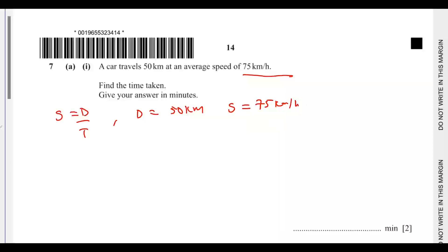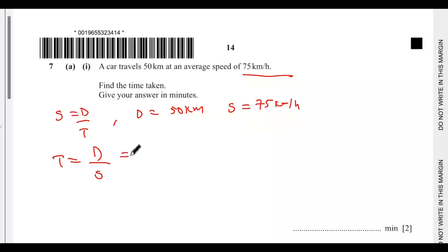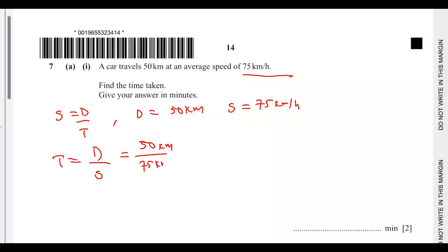We need to change hours to minutes. To find the time, time equals distance over speed. So the distance is 50 kilometers and the speed is 75 kilometers per hour. We want to leave our answer in minutes, so it will be 50 kilometers...